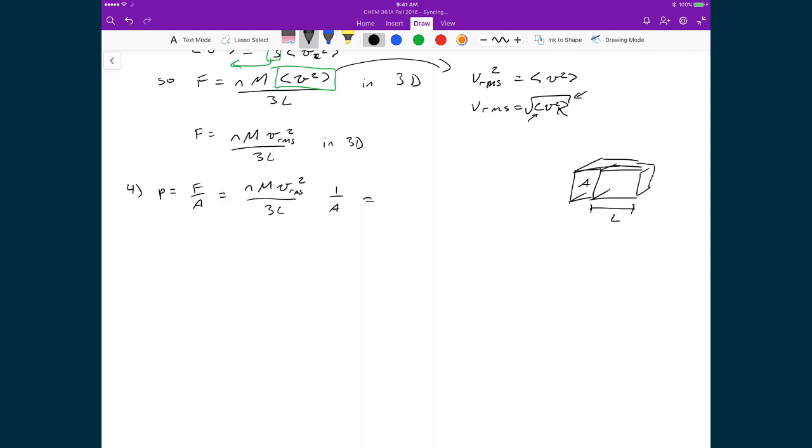But the area now then defines, if I have an area and I multiply it by a length, that gives me a volume. In the end, I can combine the L and the A, and I'm just defining the volume of the box which is containing my gas. So this completes the derivation for the pressure of an ideal gas in a box.